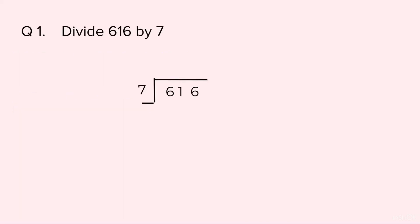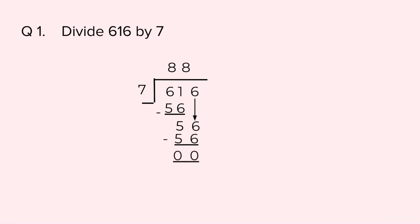Question 1: divide 616 by 7. 6 is smaller than the divisor, so we will take the first two digits, that is 61. How many times does 7 go in 61? 7 eights are 56, so we write 8 on top, 56 at the bottom. Subtract — we get 5. We bring down the 6, giving us 56 again. Write 8 at the top, 56 at the bottom. Subtract — we are left with 0. So the quotient is 88 and the remainder is 0.